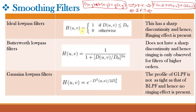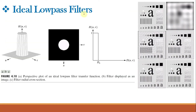Starting with the ideal low pass filter: it is given by H(u,v) = 1 if D(u,v) ≤ D0, and 0 otherwise. D0 is our cutoff frequency for the filter, and D(u,v) is the Euclidean distance from the center of the image. This ideal low pass filter cuts off all high frequency components of the Fourier transform that lie at a distance greater than the specified cutoff frequency D0.